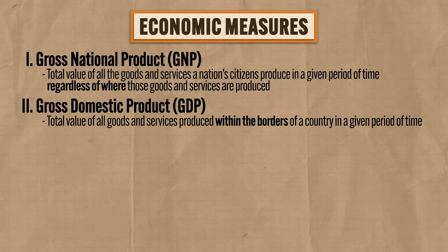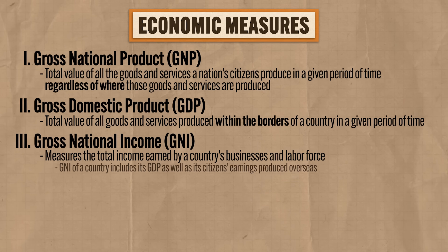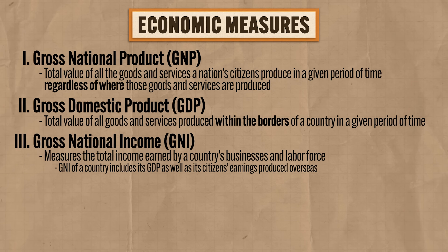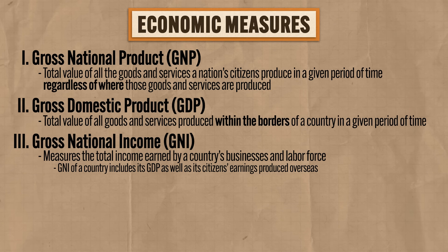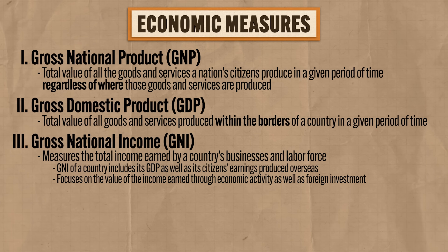The third measure you need to know is gross national income, or GNI. This measures the total income earned by a country's businesses and labor force. The GNI of a country includes its GDP but also includes citizens' earnings produced overseas. It's a very similar concept to GNP, but GNI focuses on the value of income earned through all economic activity as well as foreign investment, making it a far better measure for assessing the economic standing of developing countries.